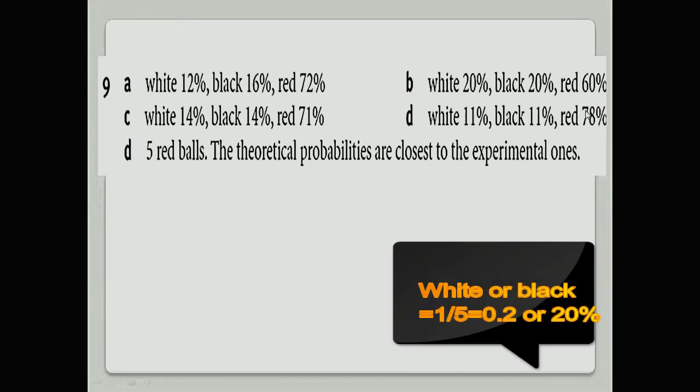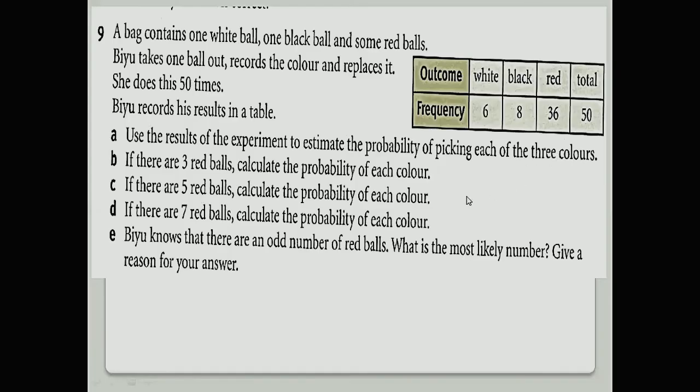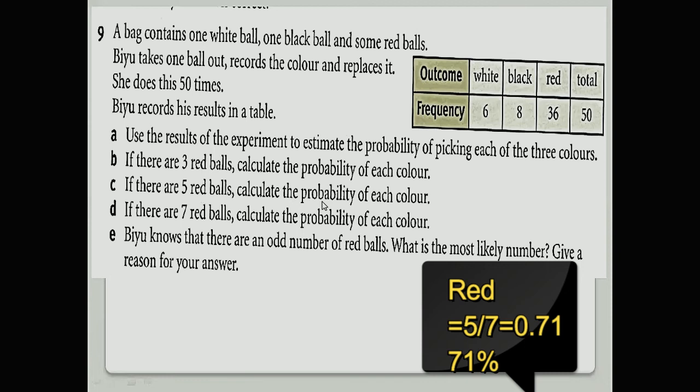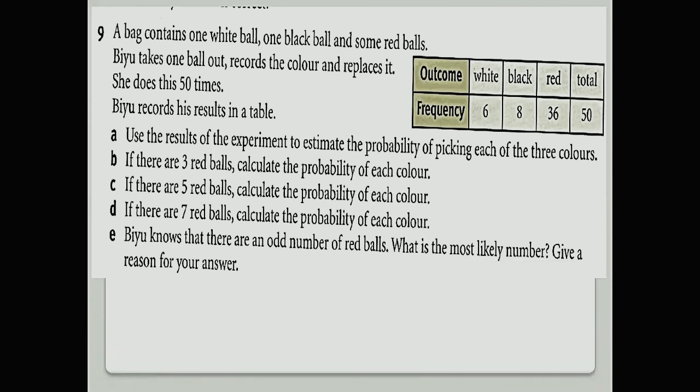60 percent is red ball. One divided by five, that is 20 percent, and 20 percent for the other. Next is the same. Now here he said if you have five red balls, five plus two is seven, so five divided by seven, you will get your answer, 71 percent.